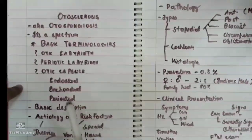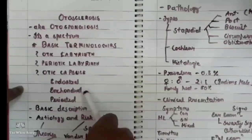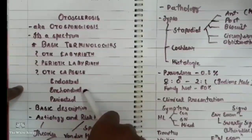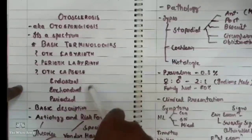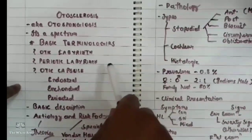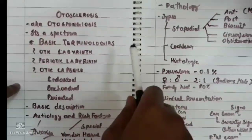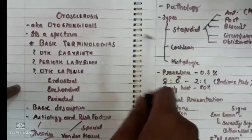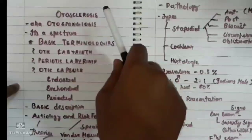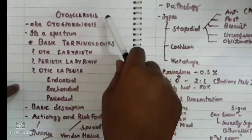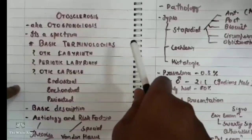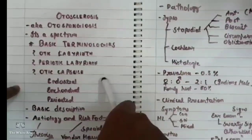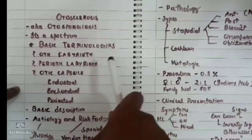Internally the otic capsule contains bone as well as certain pockets of cartilage known as the enchondral part. These pockets of cartilage present within the bony labyrinth may sometimes get ossified. On the basis of where this ossification occurs, we classify the disease — most commonly it occurs around the stapedial plate, giving us stapedial otosclerosis.